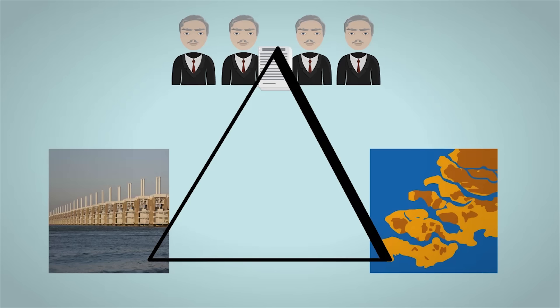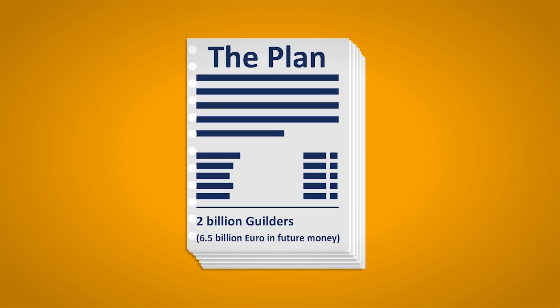The committee spent over 2 years gathering data and setting up the Delta Plan. Over those 2 years they presented 5 points on how the Netherlands should improve its flood defenses. In total, the costs were estimated to be about 2 billion guilders, which is about 2.5 billion euro in today's money.